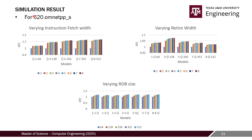For the 620 OMNETPP benchmark, the results are similar to the IMAGICK benchmark. Instruction fetch width increases IPC linearly, retire width also increases linearly resulting in higher IPC, and the ROB shows some increase in IPC as well, but it is not as significant compared to instruction fetch width and retire width.